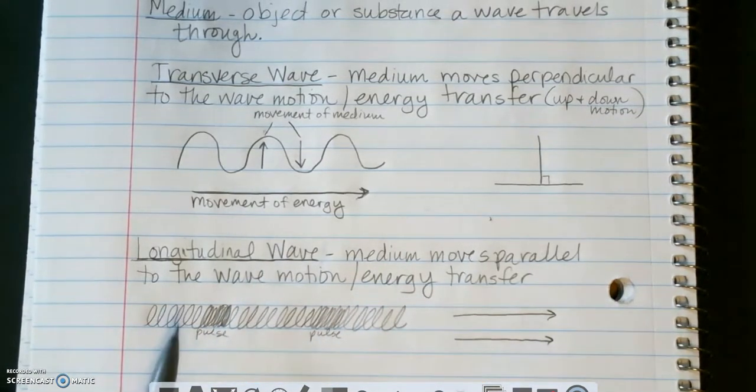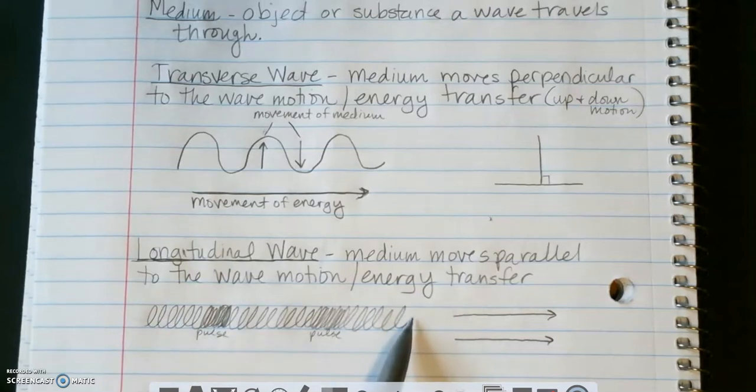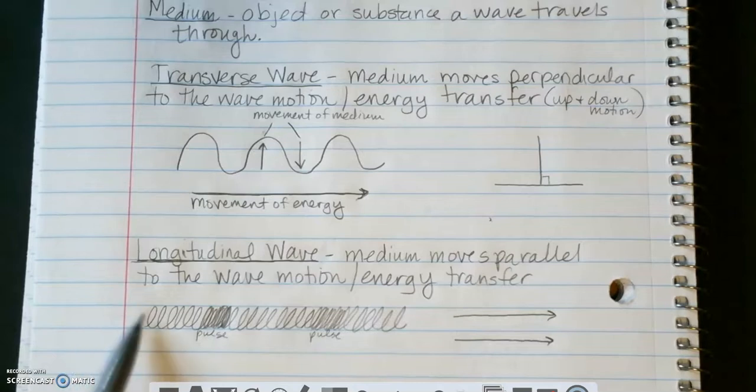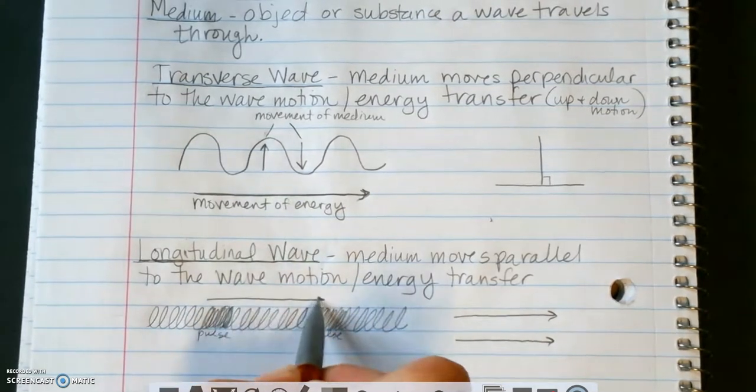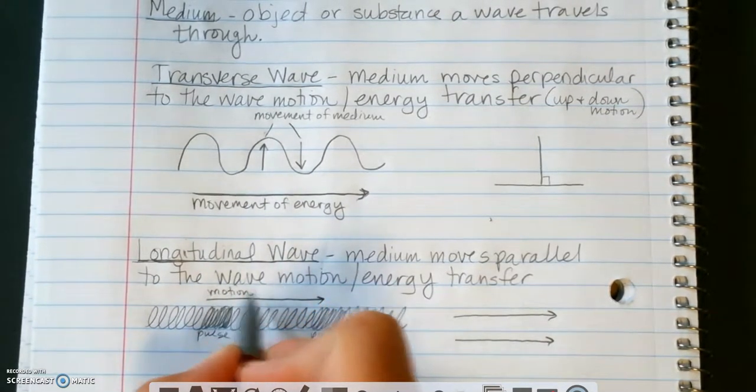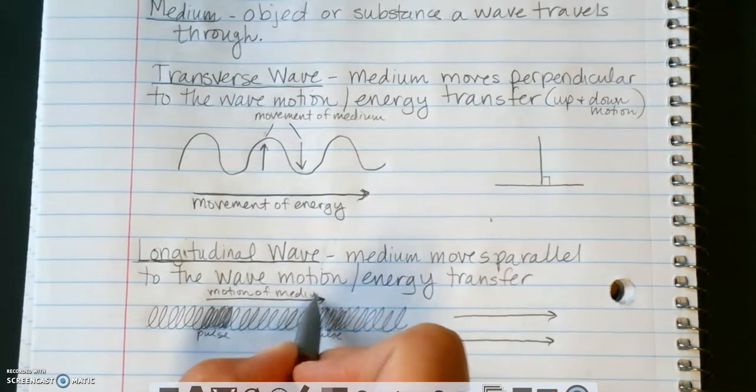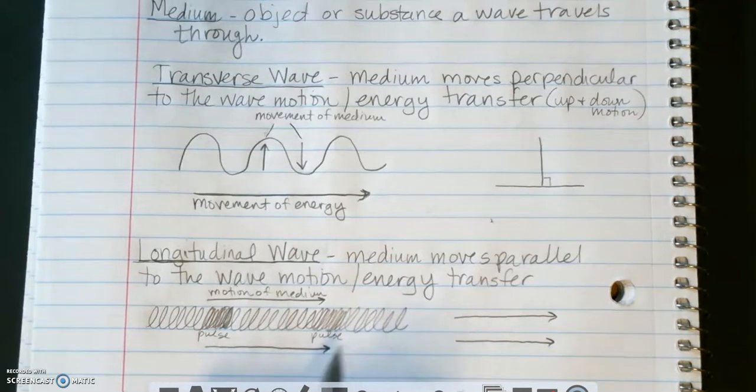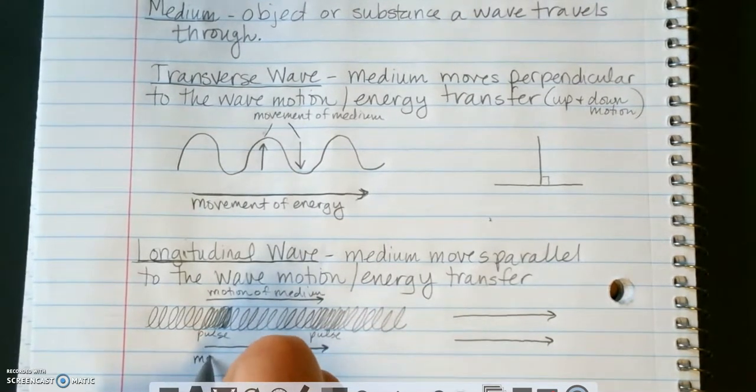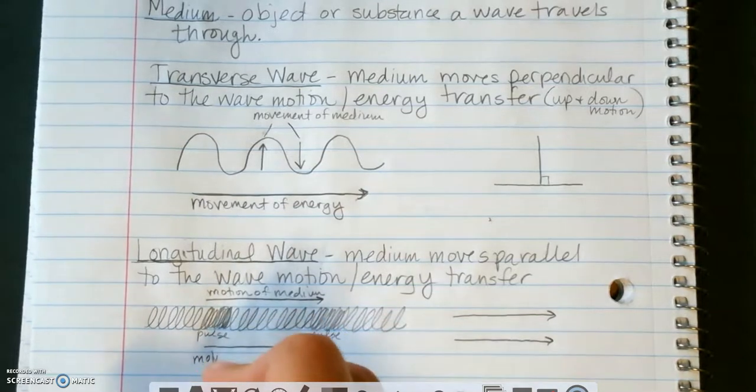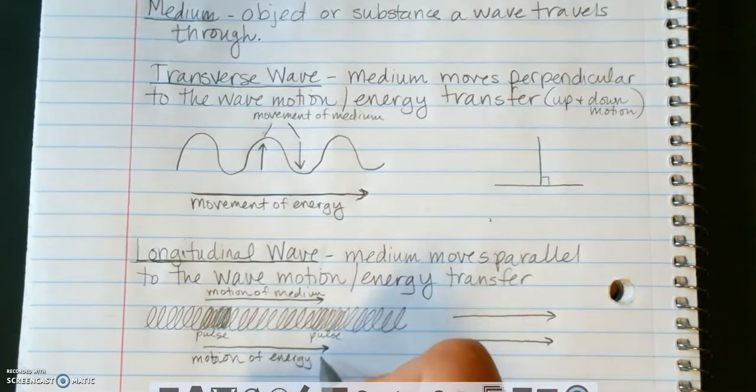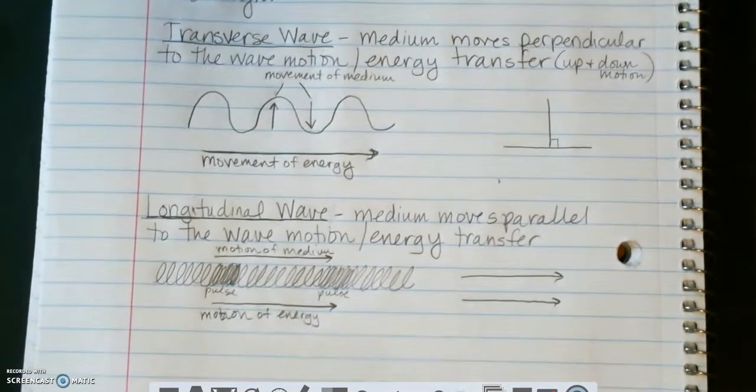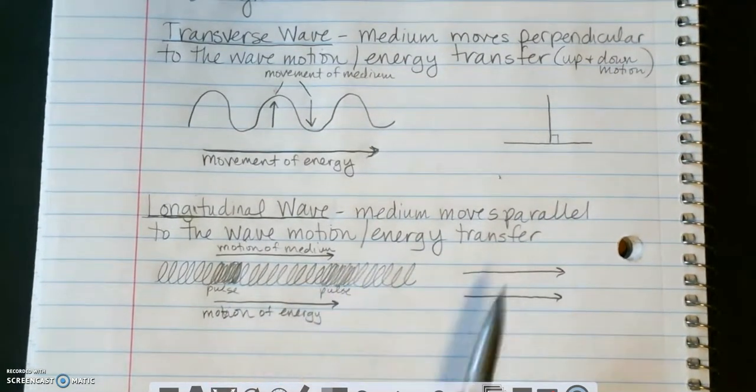So you usually can make one of these by pushing on the end of a slinky while someone else is holding it on the other end. And you push on it in this direction and then the pulse will travel. So you notice that the motion of the medium is going left to right. Also, the energy transfer, so the motion, I said movement, but I'll just use motion again here. Motion of energy is going left or right as well. So the medium and the energy are both traveling left to right. They're parallel to each other. We call that a longitudinal wave.